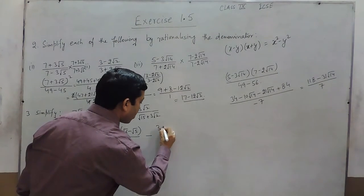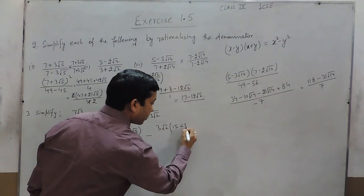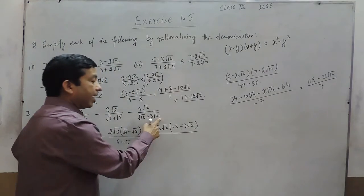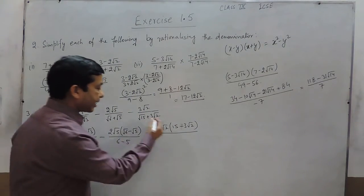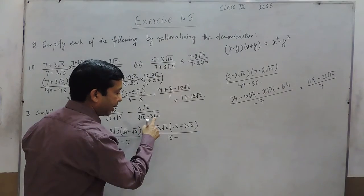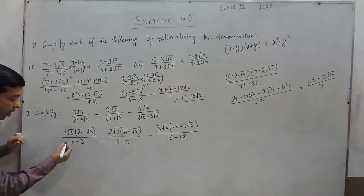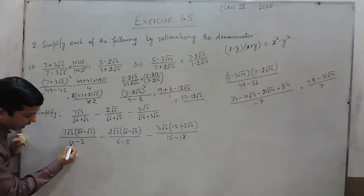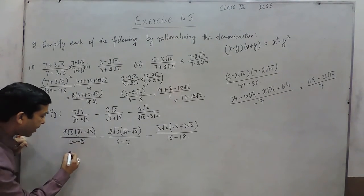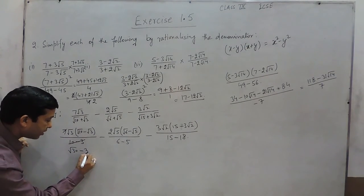For the next term, it is 3 root 2 multiplied by 15, giving minus 3 root 2. Multiplying again by the conjugate, the denominator becomes 15 minus 3 times 3 times 2, which is 18. Calculating further: 10 minus 3 is 7, and this cancels with that. So we get root 13 minus 3.